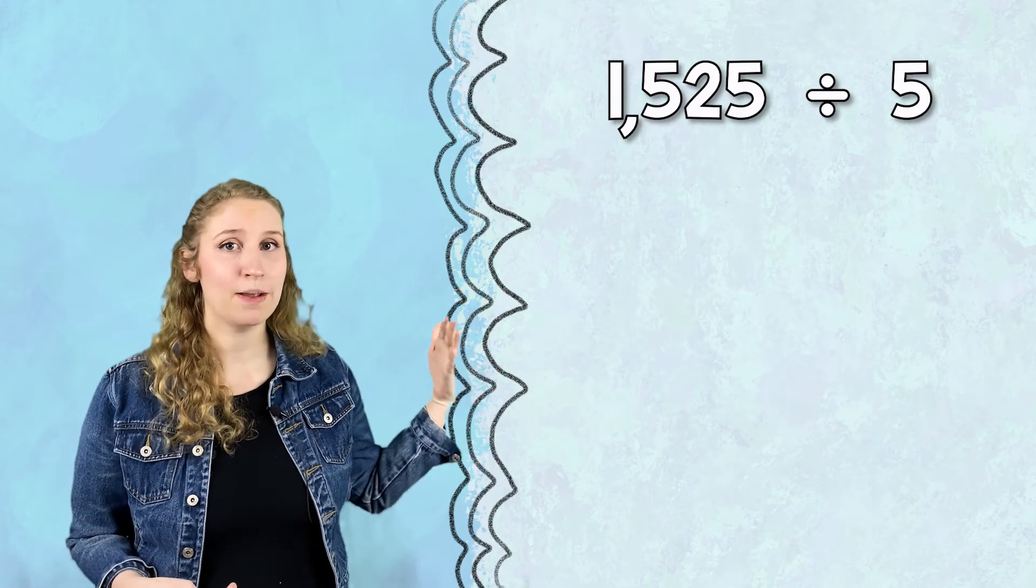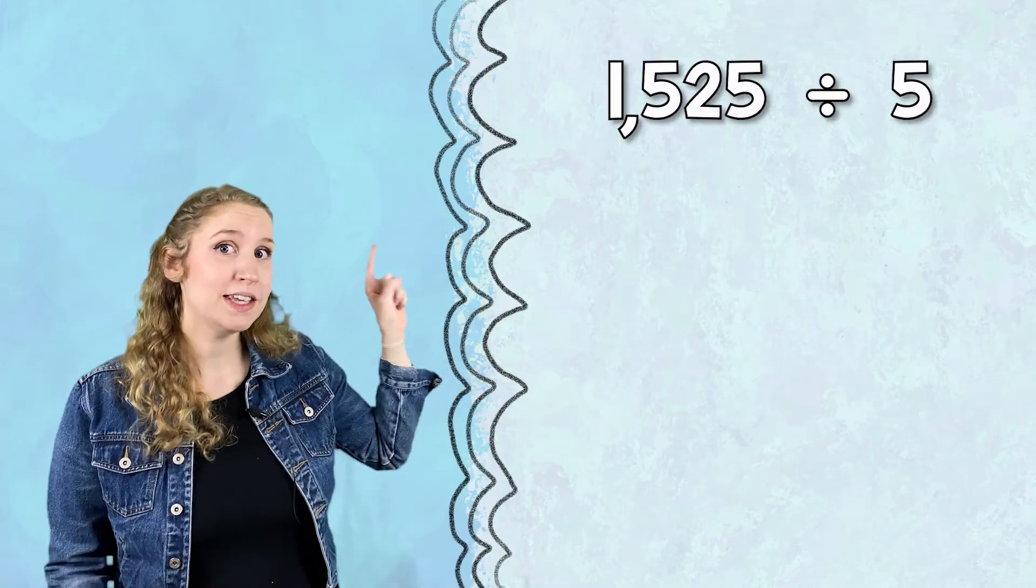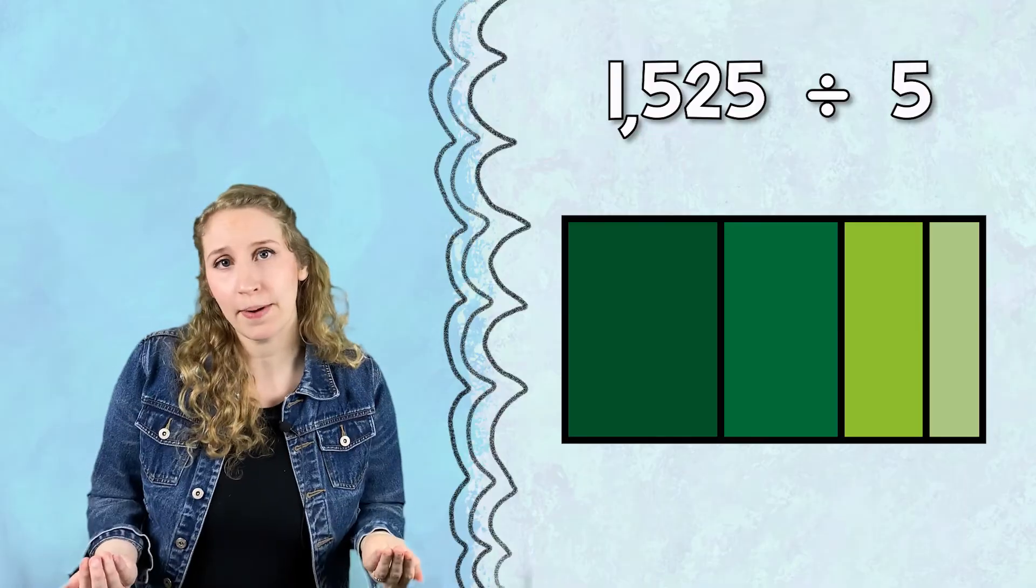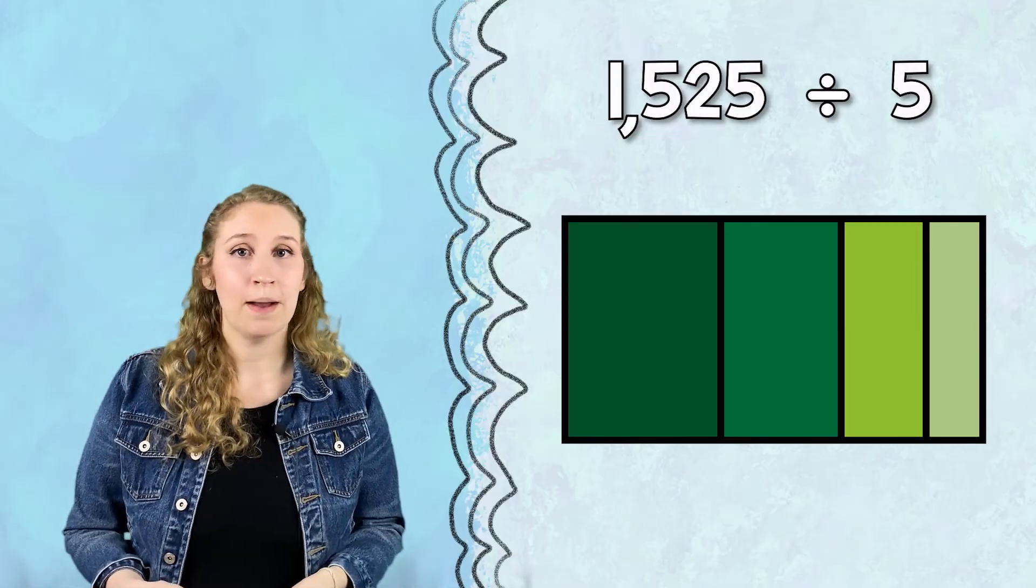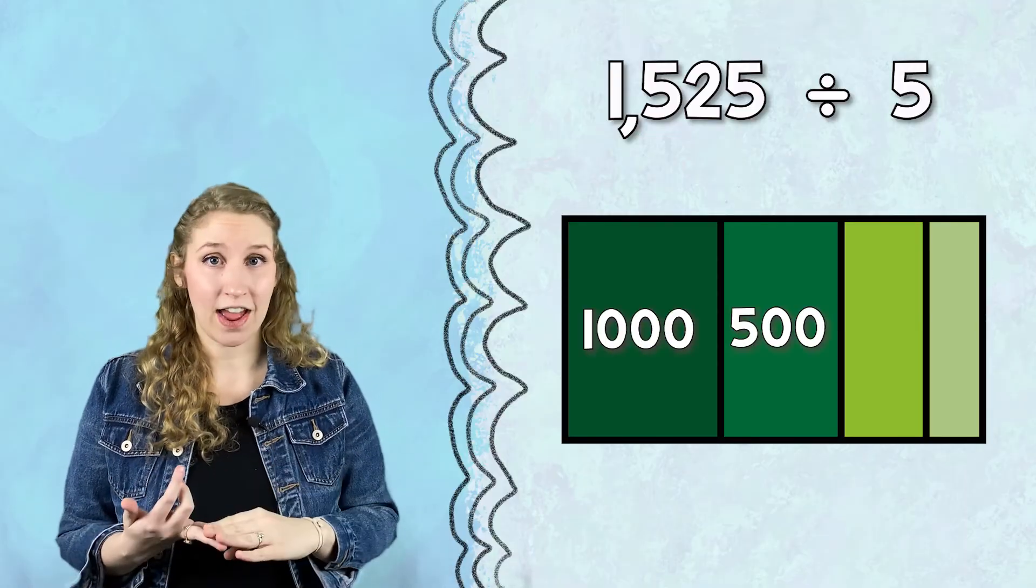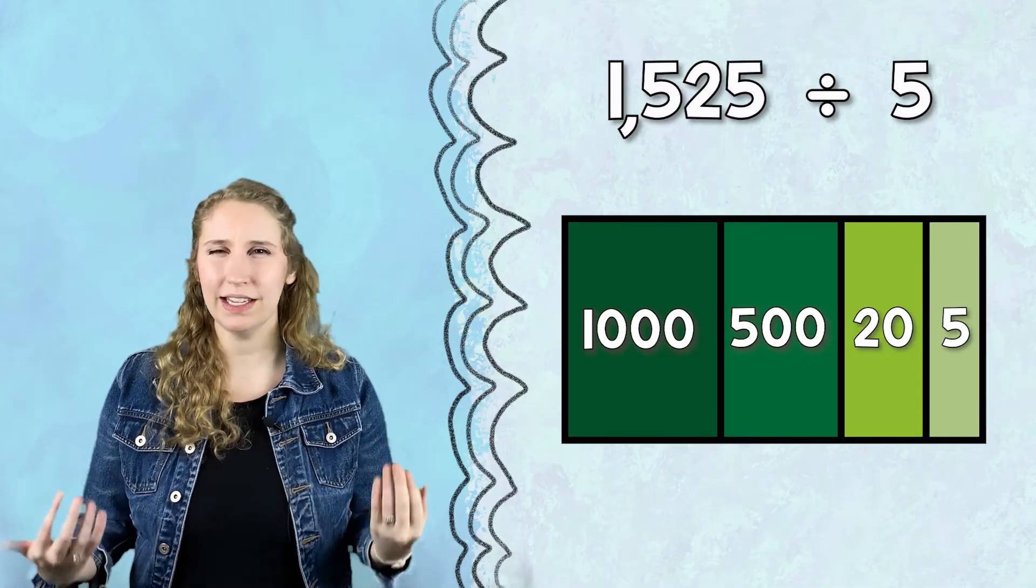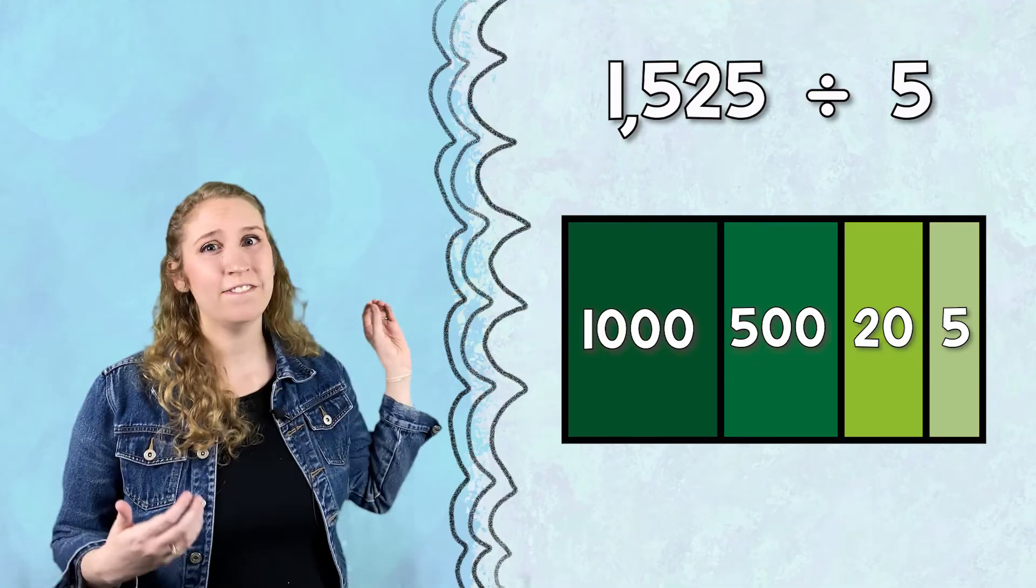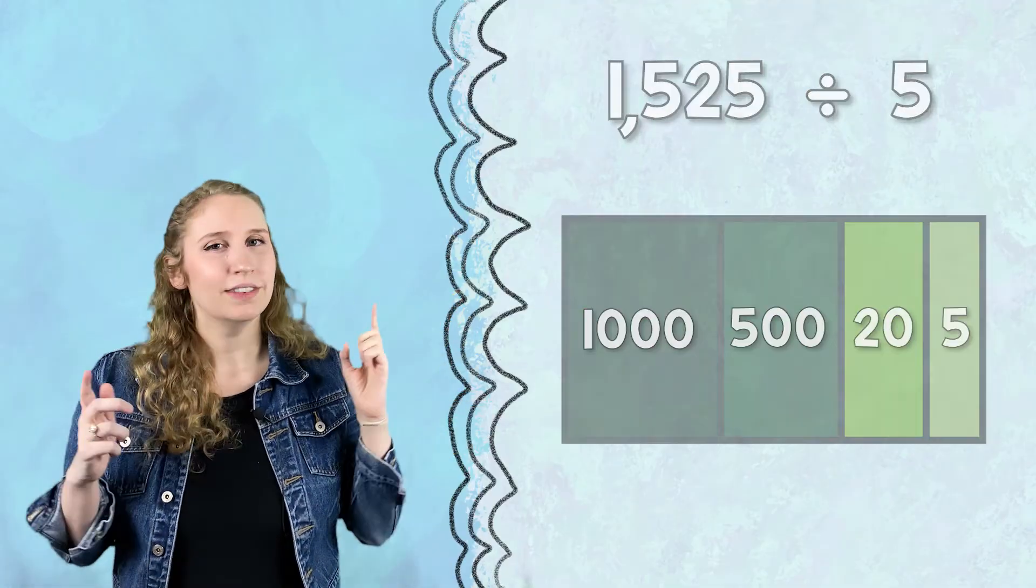If we had a number like this, 1525 divided by 5, we can break up this larger number into smaller chunks that are easier to divide by. For example, we could break it up by 1000, 500, 20, and 5. Those are easier chunks to divide, and also with an area model we can visually show that.